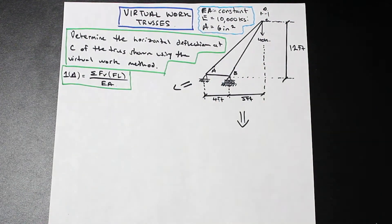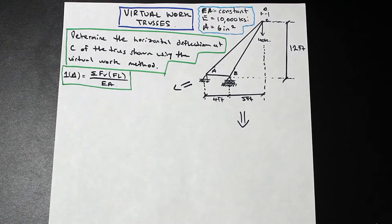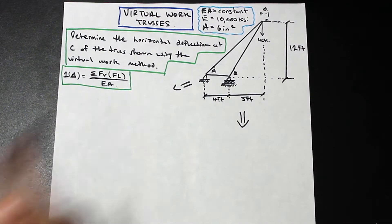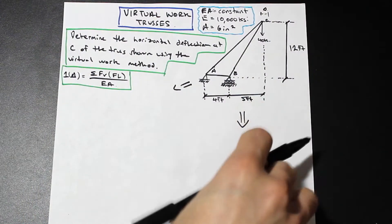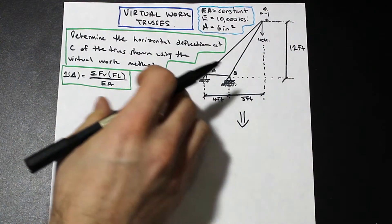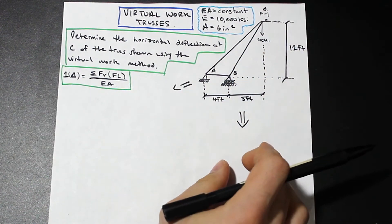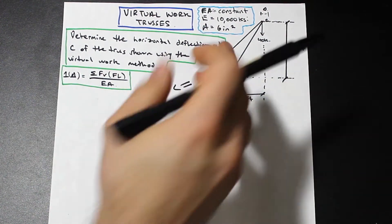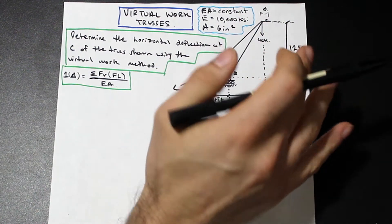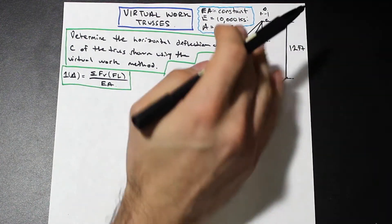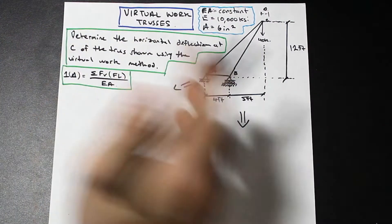This involves, if you're familiar with the virtual work method, if not it's no problem. We need to split this system up into two separate systems with the virtual work method. We need to apply a unit load at the point that we're considering. And then we need to also just take the external loadings as they are and calculate all the forces in each member of both systems.